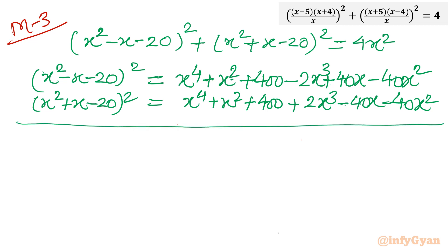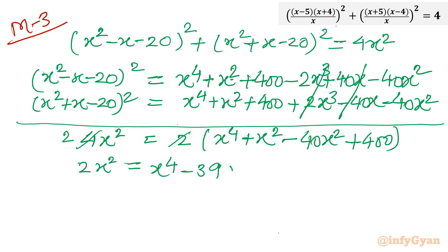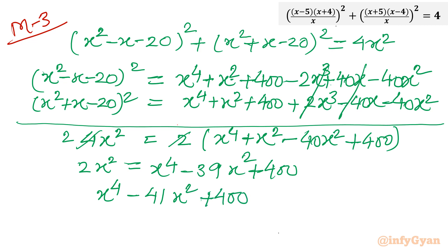Adding the two expansions, the 2x cubed and minus 2x cubed cancel, as do the 40x and minus 40x terms. The result is 2 times (x to the 4th plus x squared minus 40x squared plus 400) equals 4x squared. Dividing by 2 and taking all terms to the right: x to the 4th minus 41x squared plus 400 equals 0.